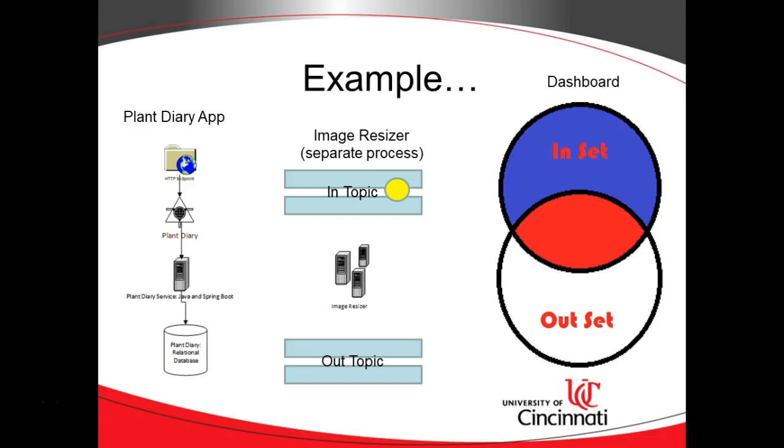The plant diary application is going to take this image information and add that to our in topic. Now, because it's a topic, it can have multiple subscribers. Our dashboard subscribes to it, and the image resizer program also subscribes to it. So, our dashboard is going to get a reference to this object, and it's going to put it in a set that we're going to call in. So, these are things that have been seen by the in topic.